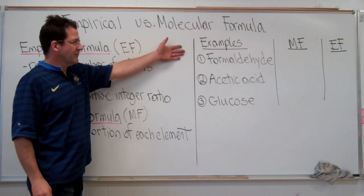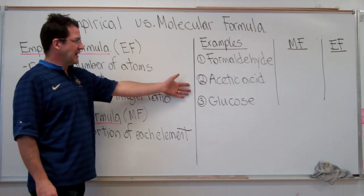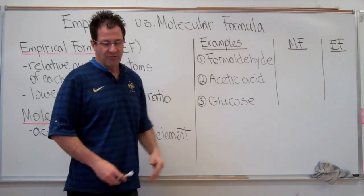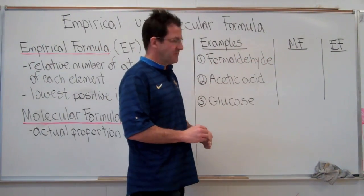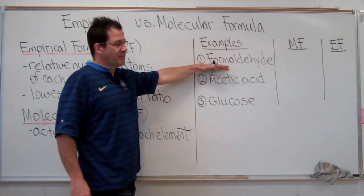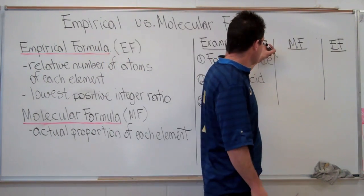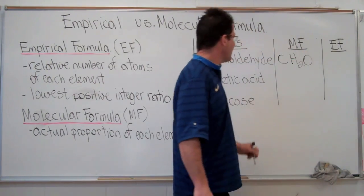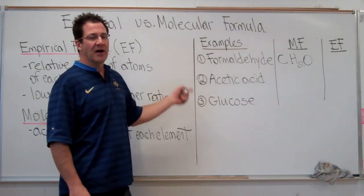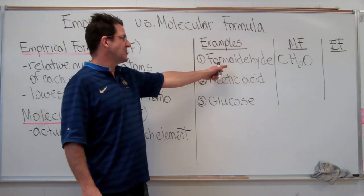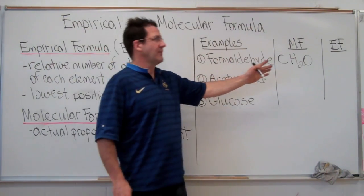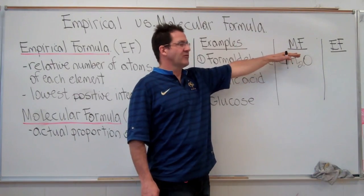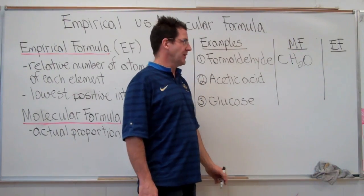Here are a few examples: formaldehyde, acetic acid, and glucose. I'm going to write down the molecular formula and the empirical formula so you can see the difference. Formaldehyde has a molecular formula of CH₂O — that's the actual proportion of atoms of each element in that compound. Most of the time when people ask for the chemical formula, they're asking for the molecular formula.